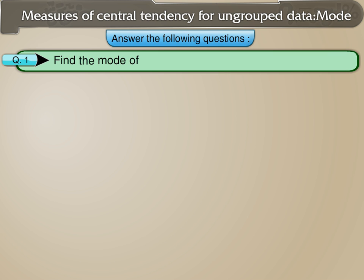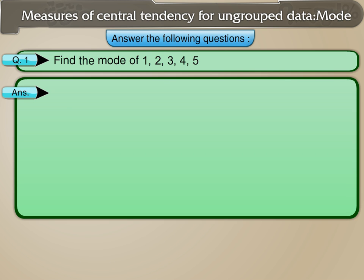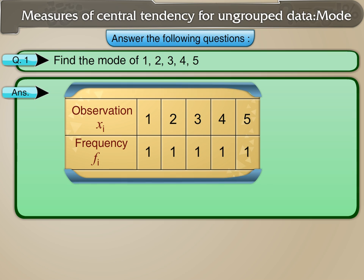Find the mode of 1, 2, 3, 4, and 5. Since no observation has a frequency greater than 1, mode does not exist.